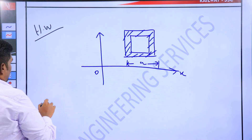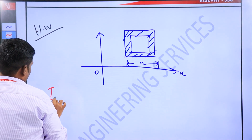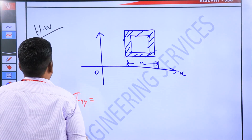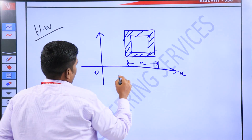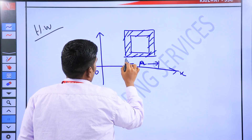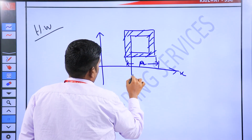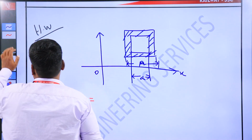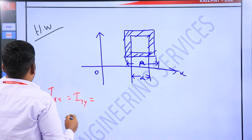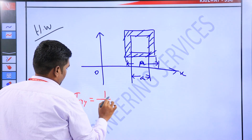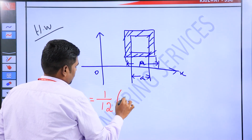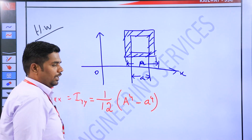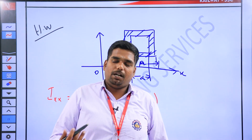Okay, formula: Ixx equal to Iyy — same. Now this is small 'a' and capital 'A'. So formula Ixx = Iyy = 1 divided by 12, capital A to the power 4 minus small a to the power 4. This is the previous line formula I told you, so that's the process.